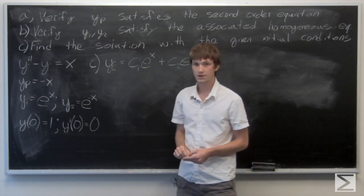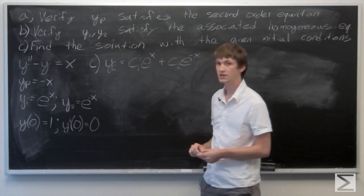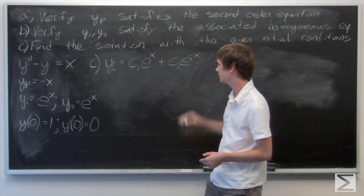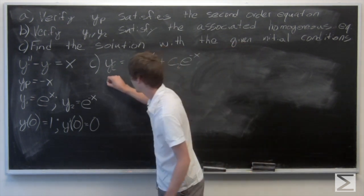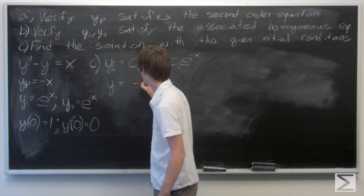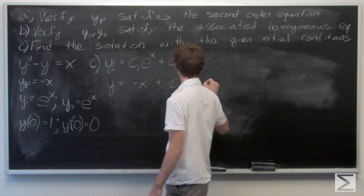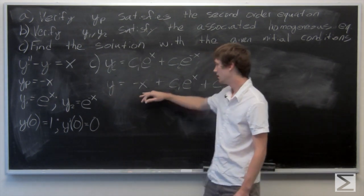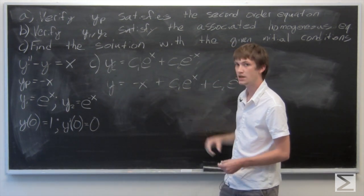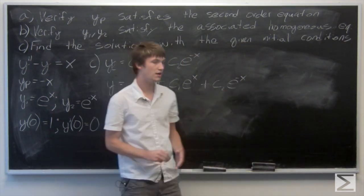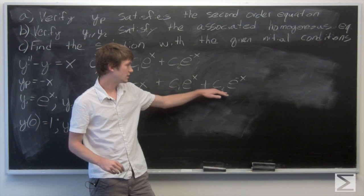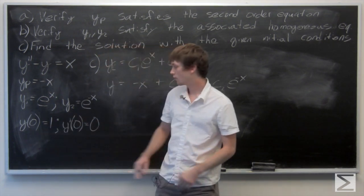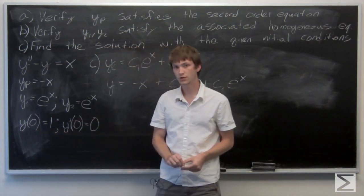Our complementary solution yc is equal to some constant c1 times e to the x plus some constant c2 times e to the negative x. Our general solution is y equals negative x plus c1 e to the x plus c2 e to the negative x. We're going to solve for c1 and c2 using our given initial conditions: y of 0 equals 1 and y prime of 0 equals 0.